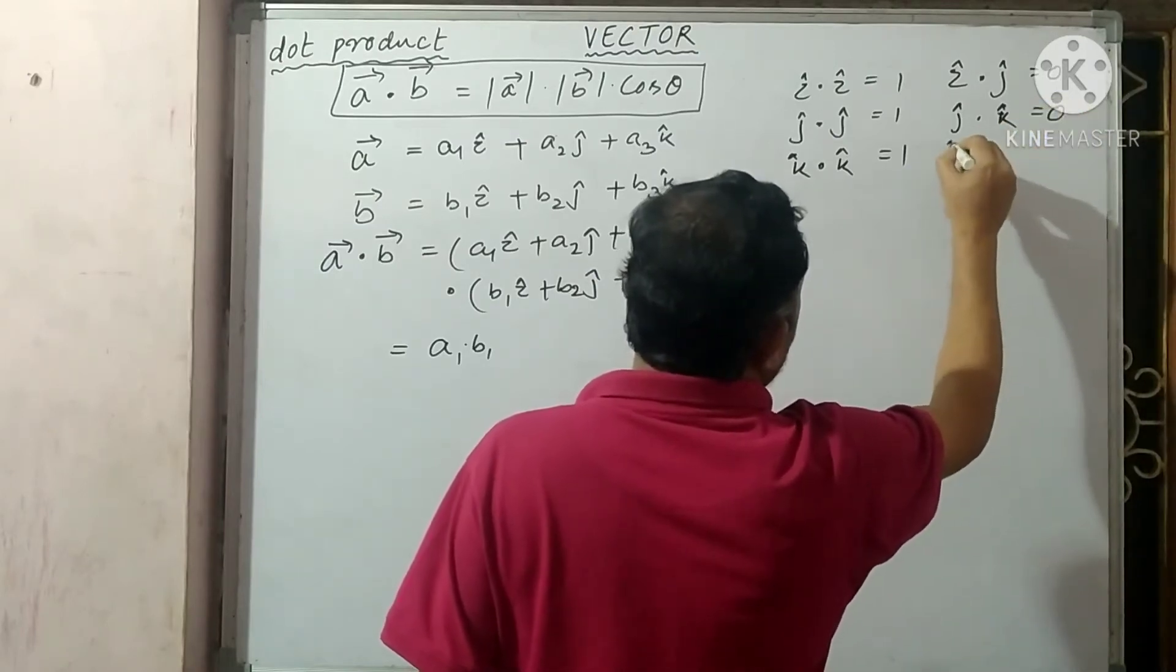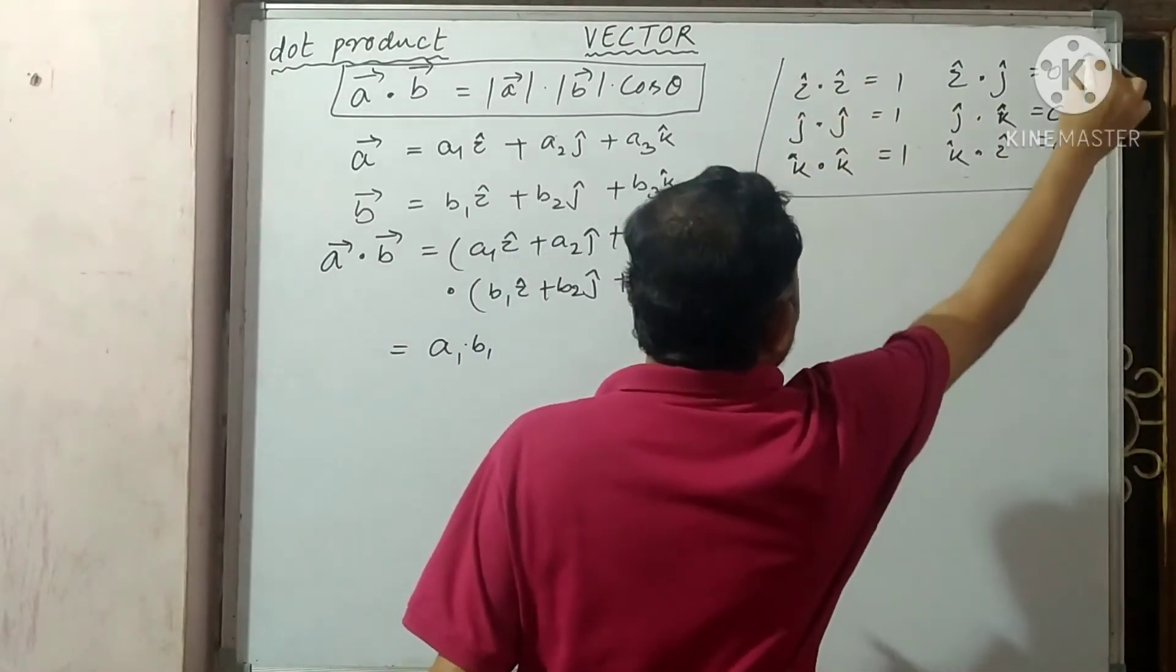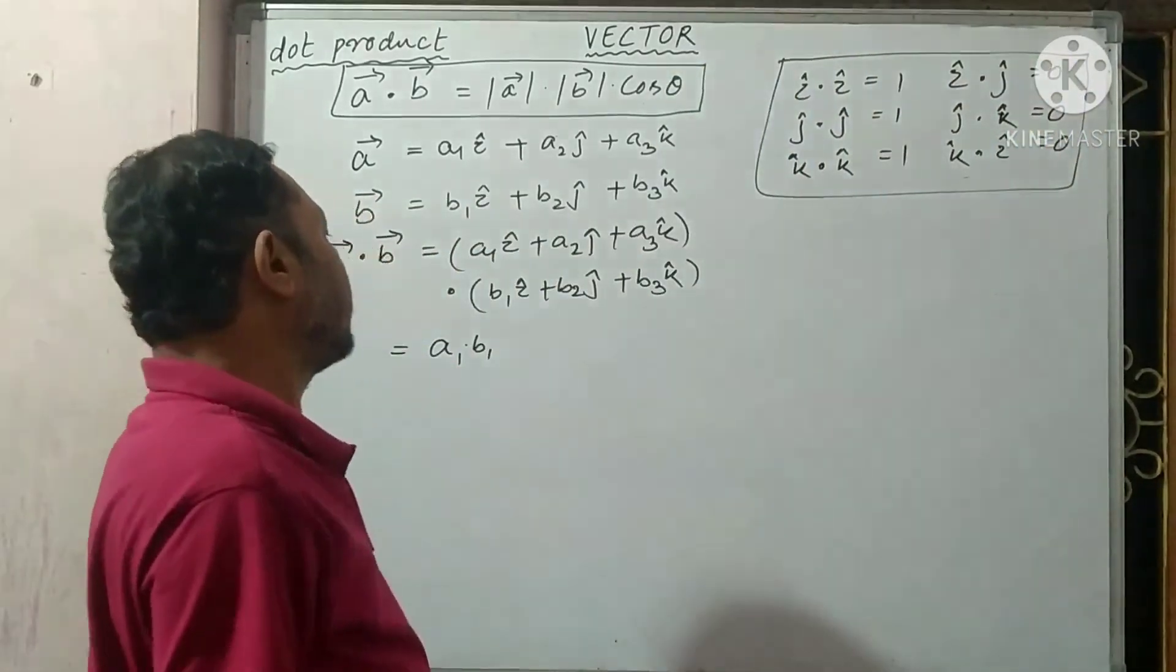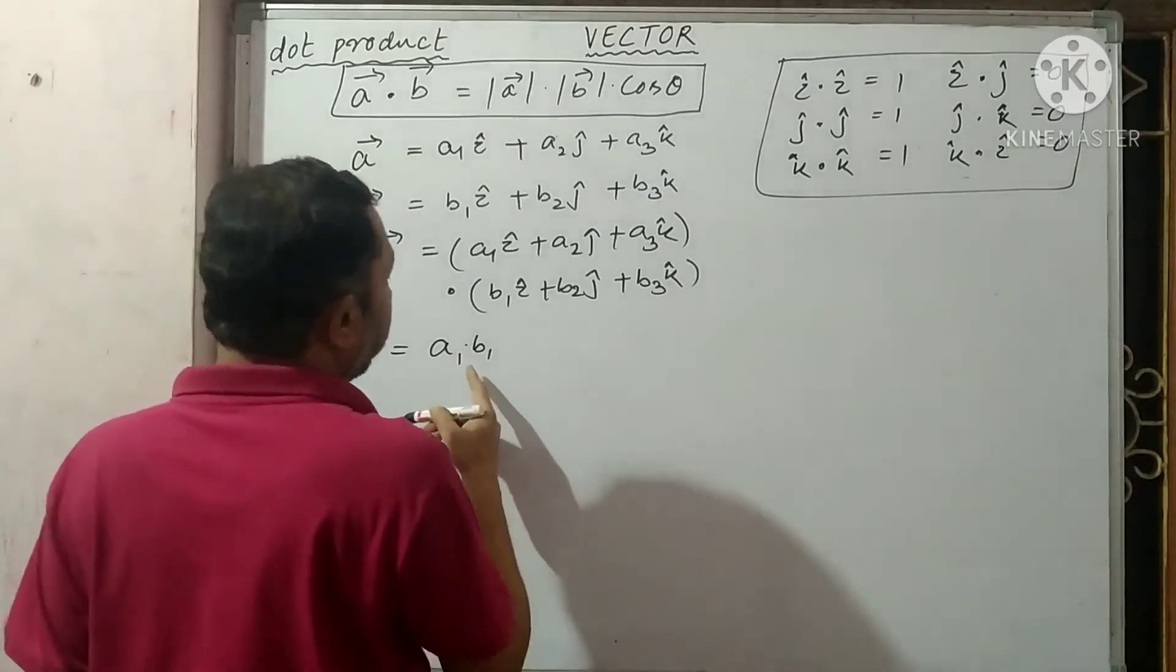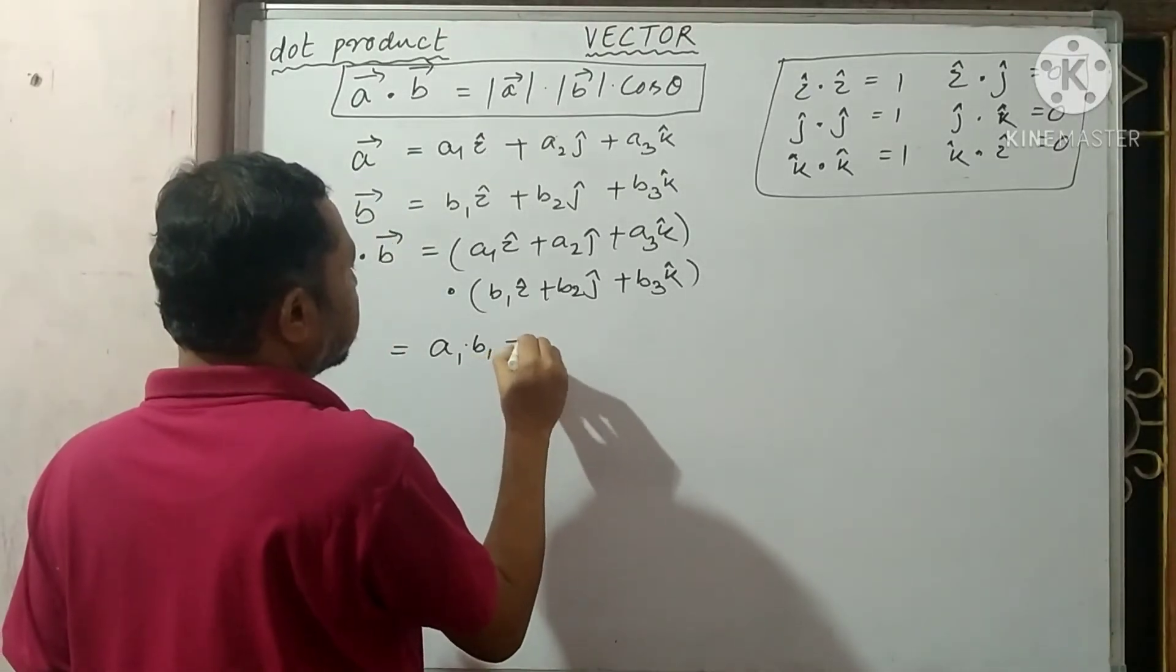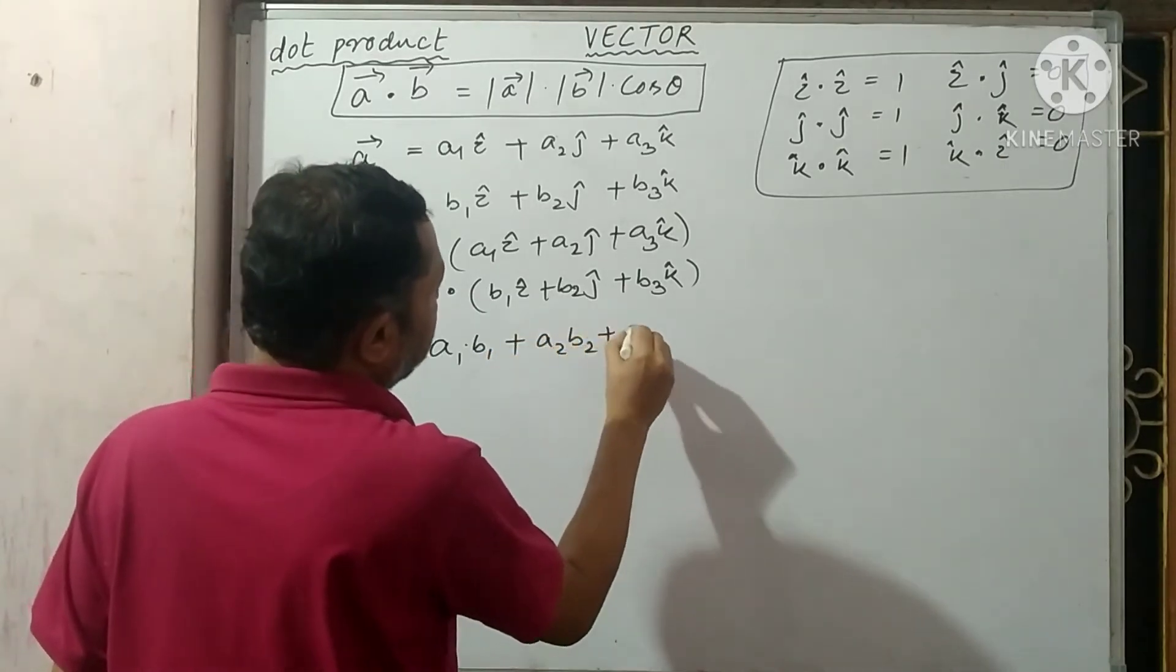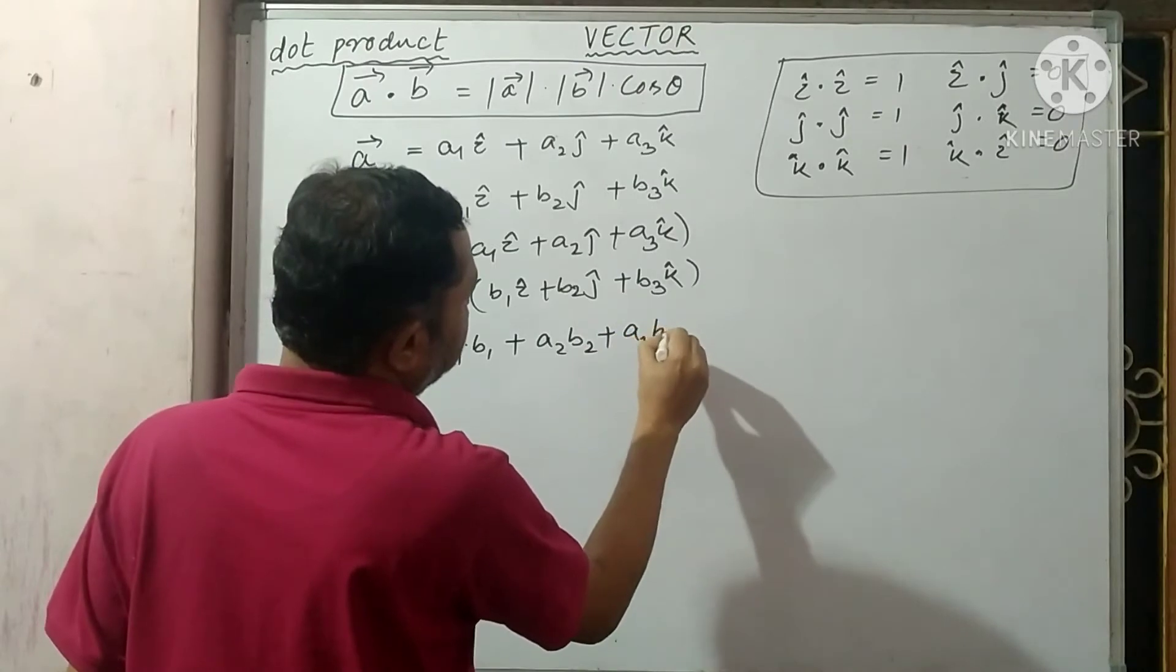You should know this thing, remember this. So we have A1 B1 plus A2 B2 plus A3 B3.